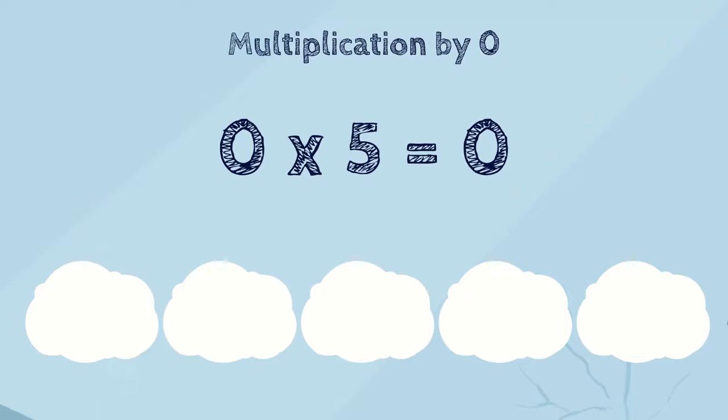We also know that we can move numbers around and it doesn't change the answer. So, it doesn't matter where your zero is placed. If you just see the number zero as one of the numbers multiplied in your multiplication problem, then your answer is zero.